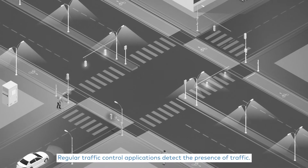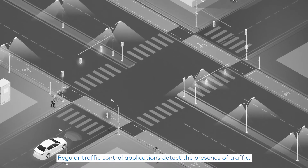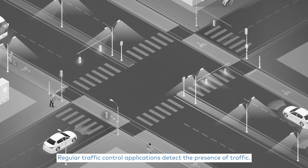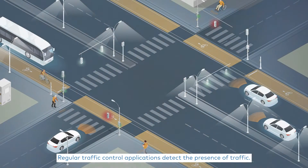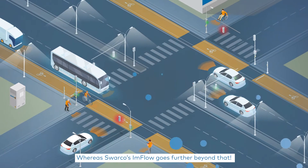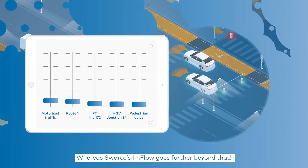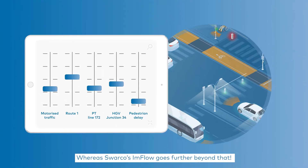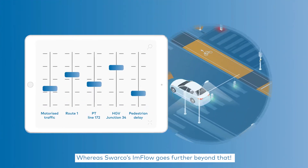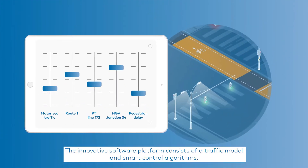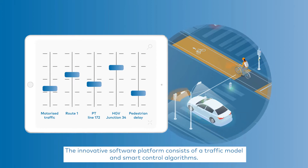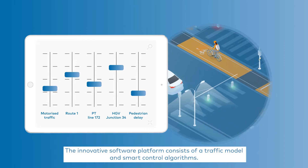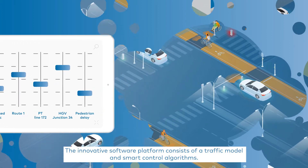Regular traffic control applications detect the presence of traffic, whereas Swarco's Inflow goes further beyond that. The innovative software platform consists of a traffic model and smart control algorithms.